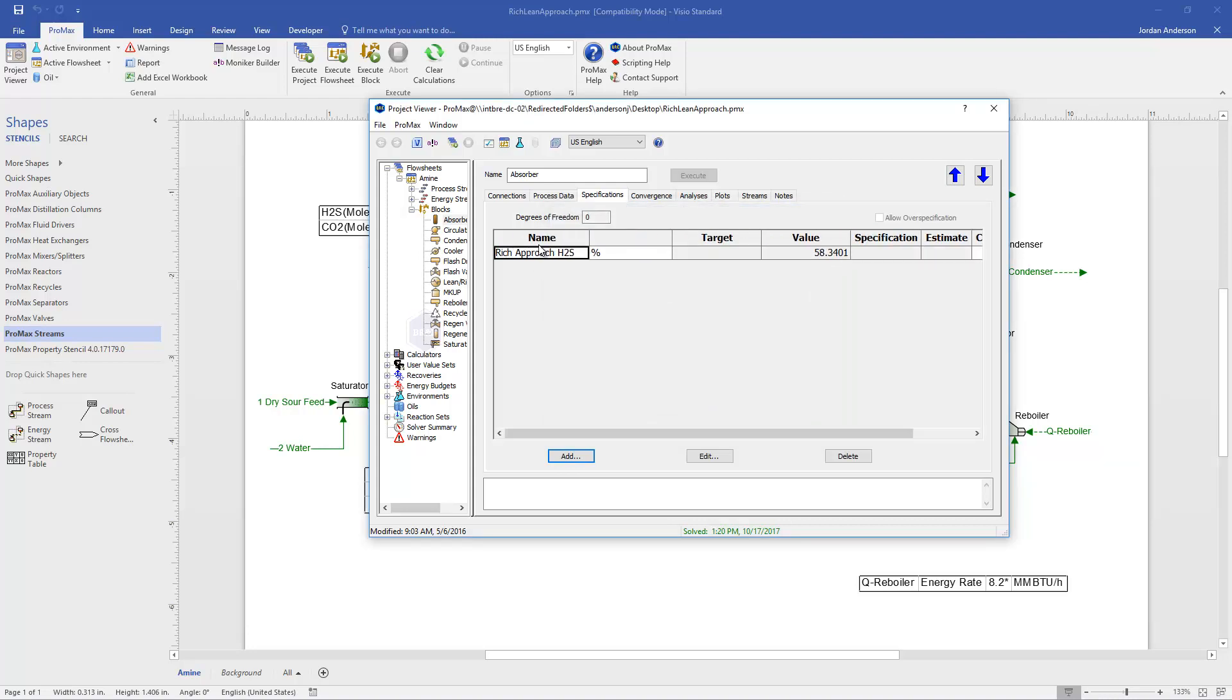And we'll see that it calculates that value for me. So it says our rich approach is at 58%, which is well below 80%. So we look good for that number.